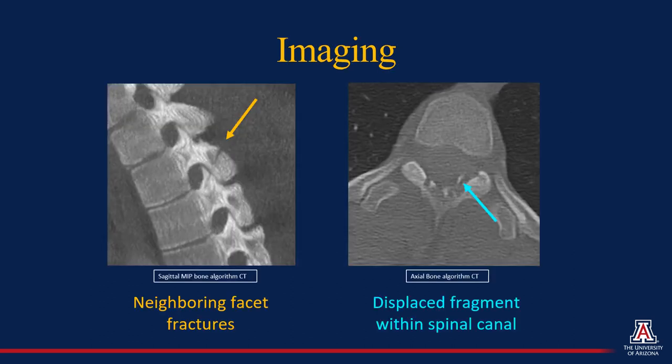The trauma team elected to obtain CT, shown here with CT of the thoracic spine. This demonstrated a fracture through the facet of the upper thoracic spine, including a displaced fragment which was visualized within the spinal canal on axial images.